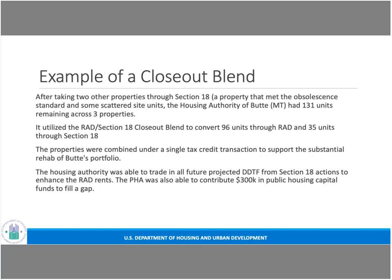In the process, the housing authority was able to trade in all of its future projected DDTF — Demolition Disposition Transition Funding — from earlier Section 18 actions. RAD allows the DDTF to be captured in the transaction, incorporating that future DDTF into the RAD rent, resulting in higher RAD rents and facilitating the property rehab. Additionally, the PHA was able to contribute $300,000 in public housing capital funds to fill in additional capital gaps — a nice example of using the blend to meet a core community need and significantly improve these properties.